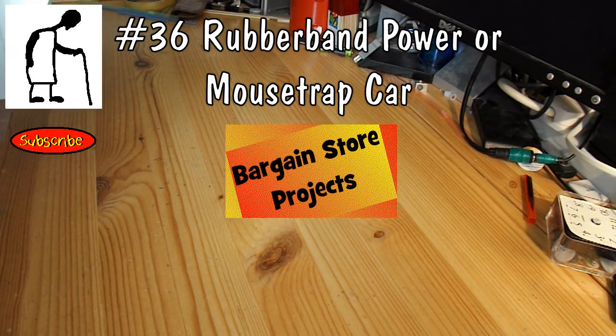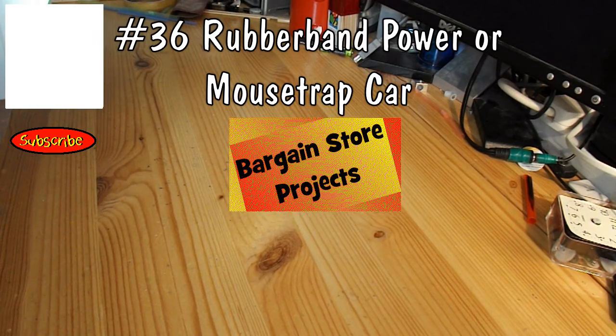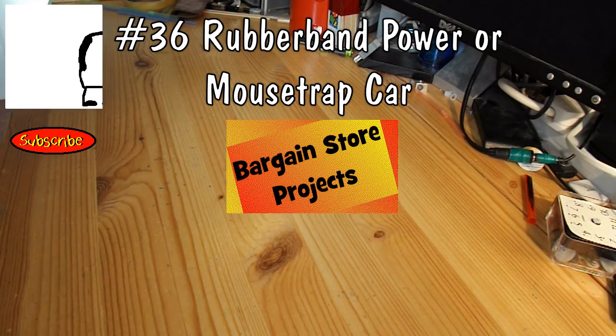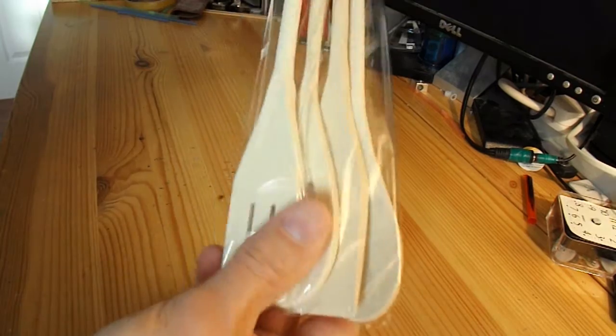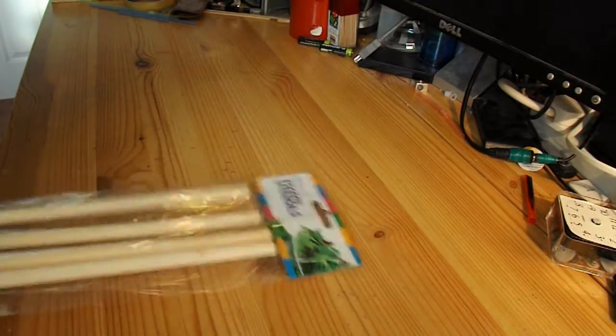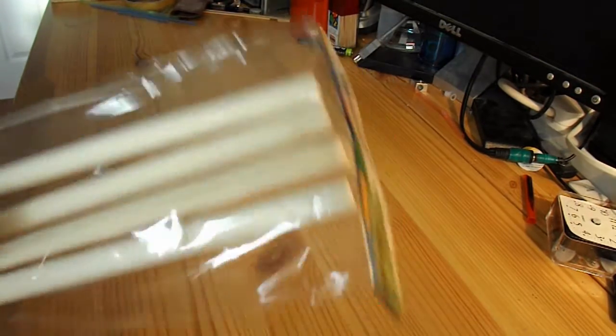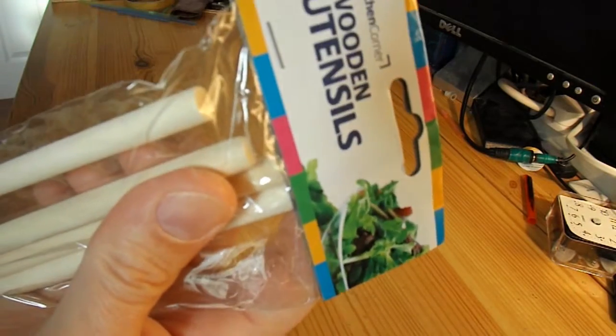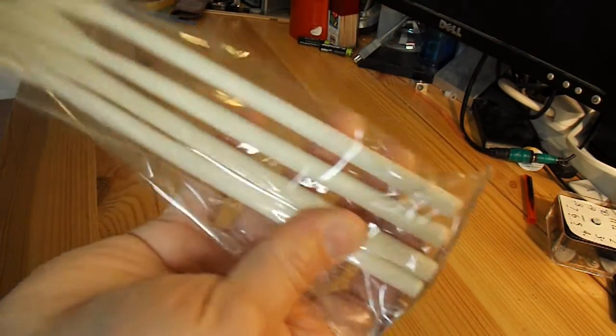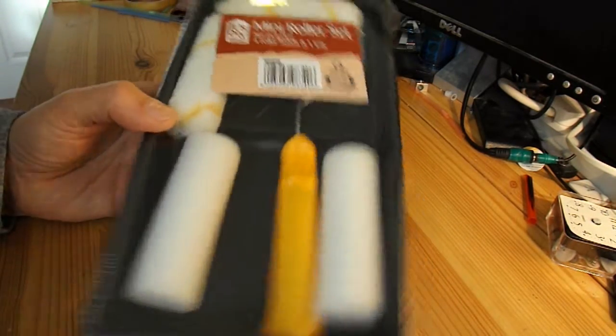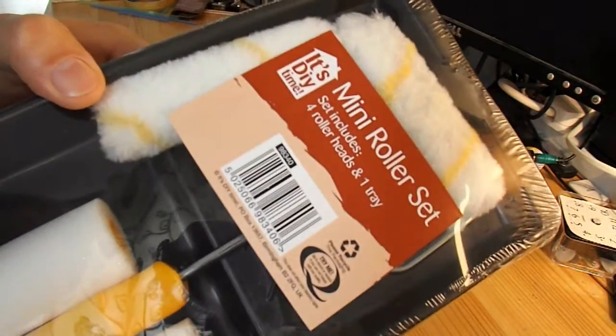Hey, what did you get at Bargain Store today then Grandad? Well, I got some wooden kitchen utensils and a mini roller set.